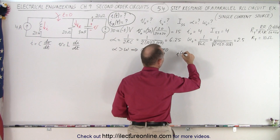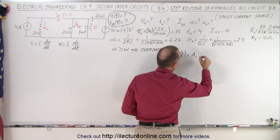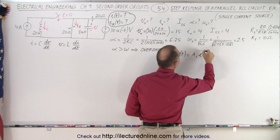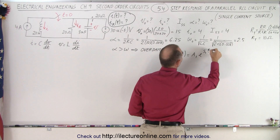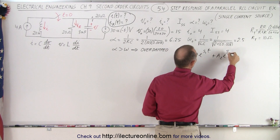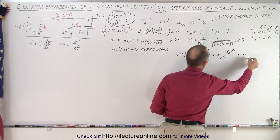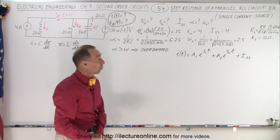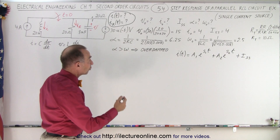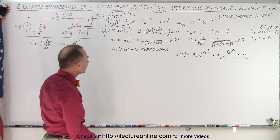Once we realize we have an overdamped case, we can write the general equation: the current as a function of time equals a1 times e to the s1t, plus a2 times e to the s2t, plus the steady state current. Then all we have to do is find what s1, s2, a1, and a2 are equal to.